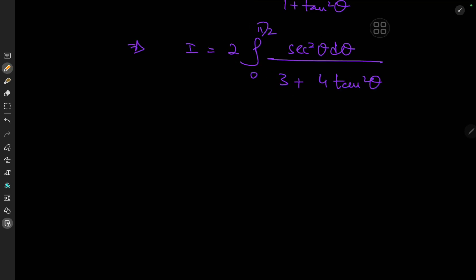Now we have a very straightforward substitution to make. We're going to let tangent theta equal to z, which implies that secant square theta d theta equals dz. As theta approaches 0, we have tangent 0 which is of course 0, and as theta approaches pi by 2, we have z approaching infinity. So we have twice the integral from 0 to infinity of dz divided by 3 plus 4 times z squared.